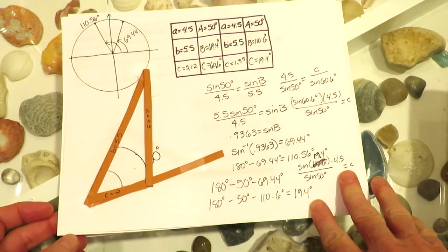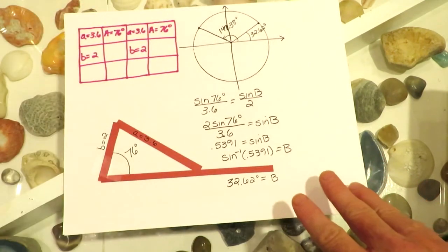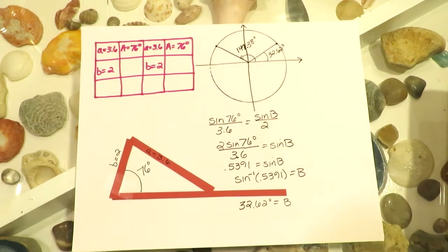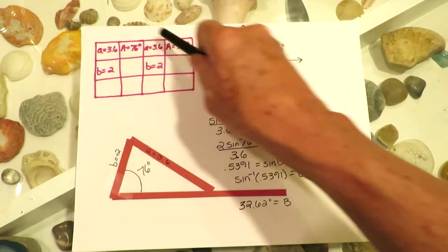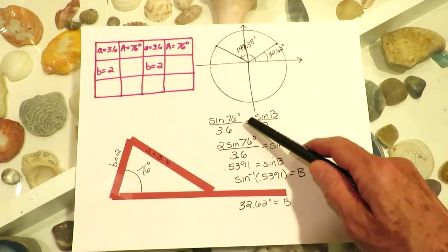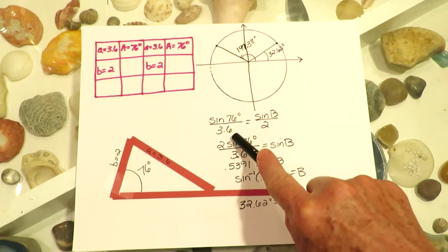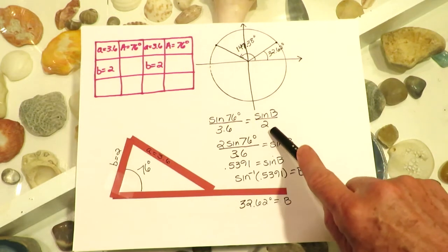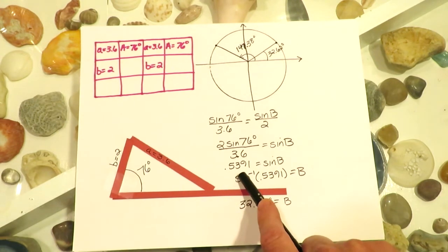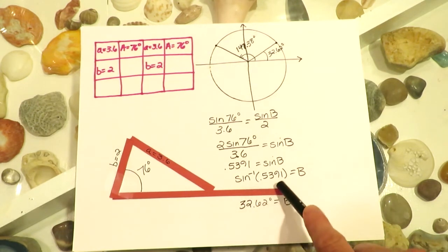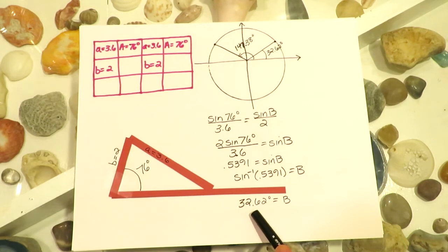Let's look at another example. Here we are given that length A is 3.6, angle A is 76 degrees, and length B is 2. Start off assuming there might be two triangles, and fill in the box with the given information. 76 degrees is opposite the 3.6. Looking for angle B opposite length 2. Multiply both sides by 2, which gives the decimal 0.5391. Inverse sine of 0.5391 gives 32.62 degrees for angle B.